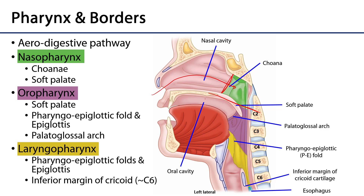The oropharynx is contiguous anteriorly with the oral cavity, so materials may move either way across a boundary known as the palatoglossal arch. The palatoglossal arch is formed from the two lateral palatoglossal folds, which are the palatoglossal muscles surrounded by oral mucosa. Inferiorly, the oropharynx is separated from the laryngopharynx by the epiglottis and pharyngoepiglottic folds, which are best visualized from a posterior view.